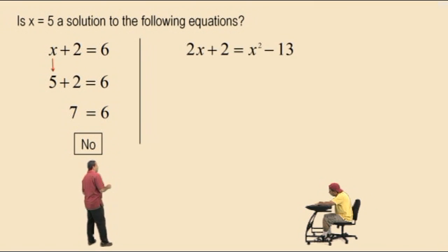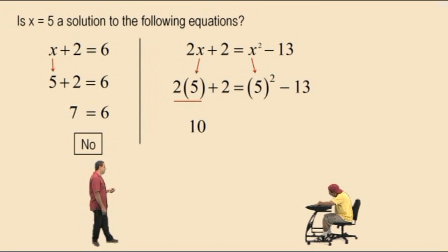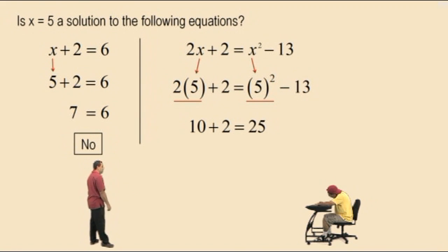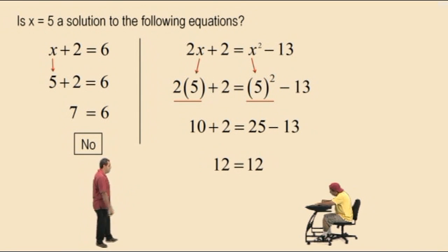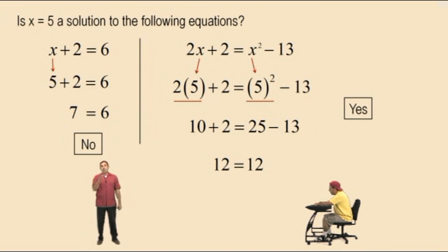Let's do another problem: 2x plus 2 equals x squared subtract 13. We're just checking if x equals 5 makes the equation true. Substitute x with 5. On the left side, 2 times 5 is 10; 10 plus 2 is 12. On the right side, 5 squared is 25; 25 subtract 13 is 12. Both sides equal 12, so yes — x equals 5 is a solution to this equation. Hopefully now we understand the difference between expressions and equations. Let's take a break and we'll see you all again soon.